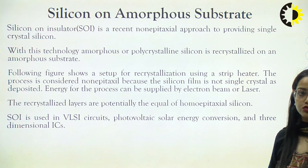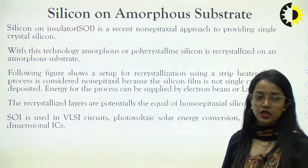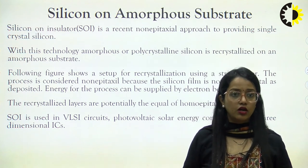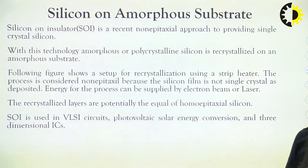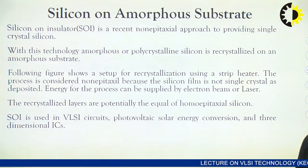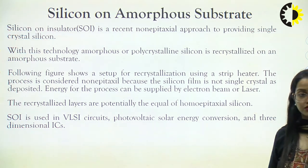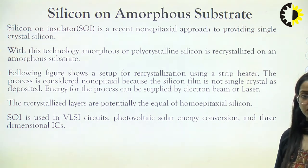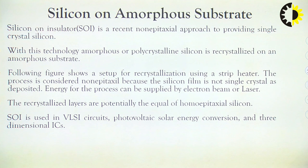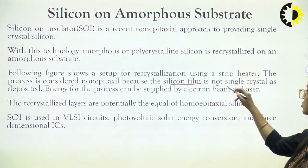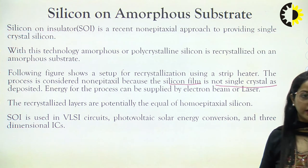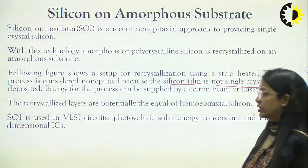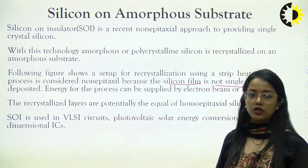We also study the epitaxial growth of silicon on an amorphous substrate. Silicon on insulator is a recent non-epitaxial approach to provide single crystal silicon — amorphous or polycrystalline silicon is recrystallized on an amorphous substrate using a strip heater. This process is considered non-epitaxial because the silicon film is not in a single crystal as deposited. Energy for the process can be supplied by an electron beam or laser. The recrystallized layers are potentially equal to homo-epitaxial silicon.